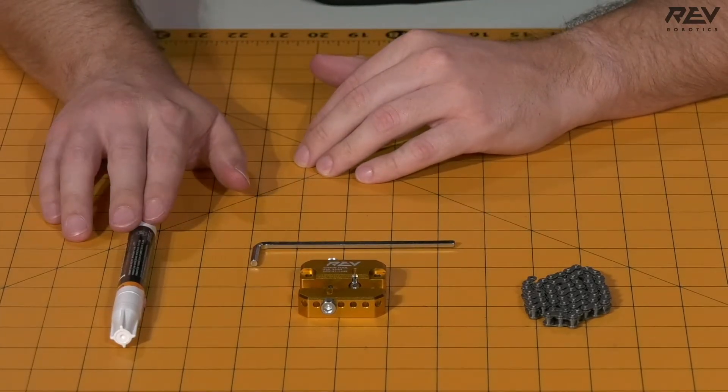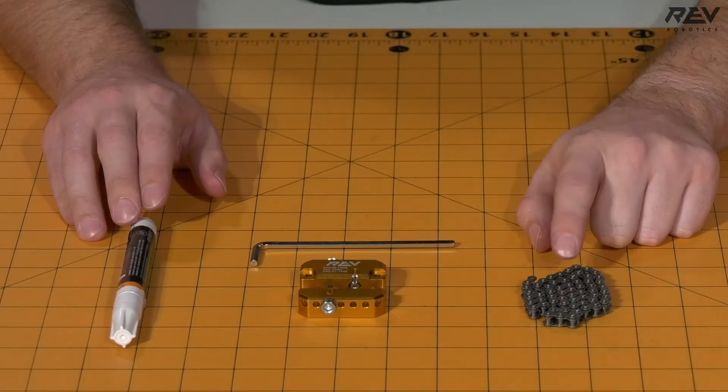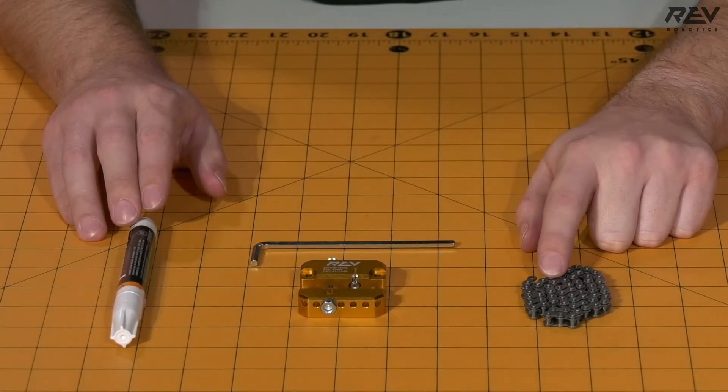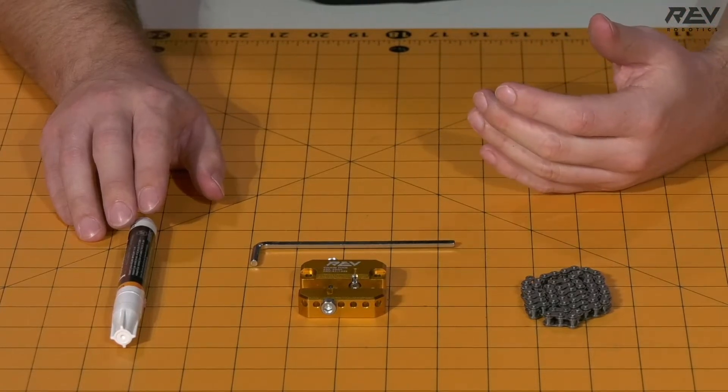I also like to have a paint pen or a silver Sharpie or something along those lines to be able to mark the bushing and pin that we need to push through on the chain, just to make it easier when you're using the chain tool.